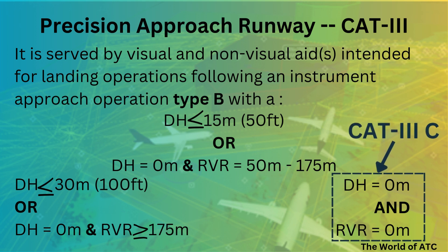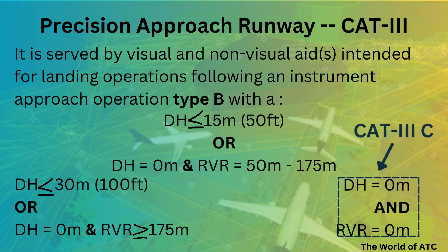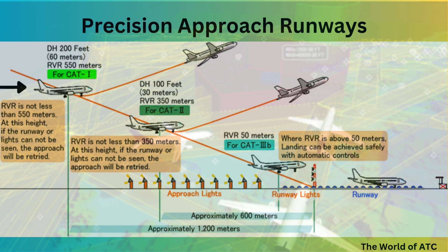This can be better understood with an illustration. Suppose an aircraft is approaching a runway. Imagine the runway is CAT-1, so the decision height would be 200 feet. If at 200 feet the pilot is not visual with any visual reference — including approach lights, runway lights, the runway itself, or markings — he will discontinue the approach.